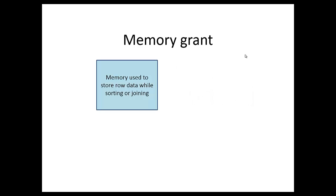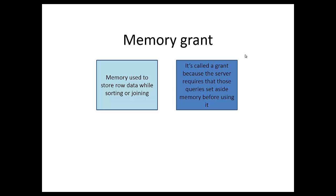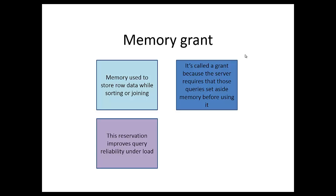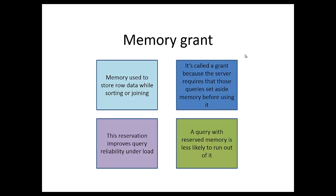Memory is used to store row data while sorting or joining. We need memory for sorts and joins. It's called a grant because the server requires that queries set aside memory before using it. So memory is used for sorting and joining, and it needs to set aside that memory before the query is run. The reservation improves the reliability of the query under load. So a query with reserved memory is less likely to run out of it — if you set aside some memory at the beginning, you're less likely to run out during the operation.